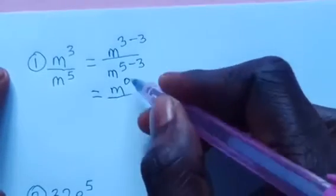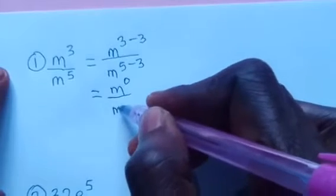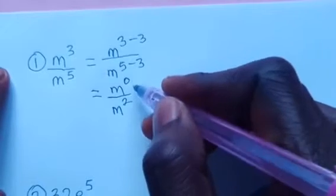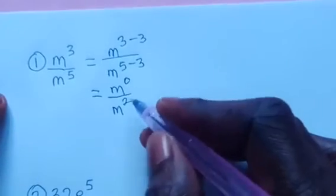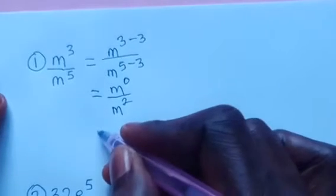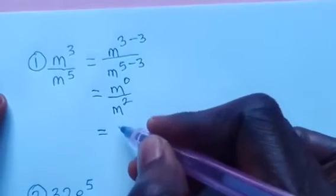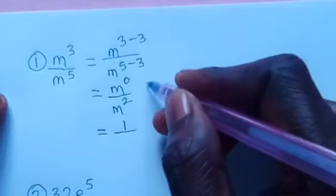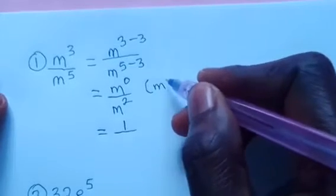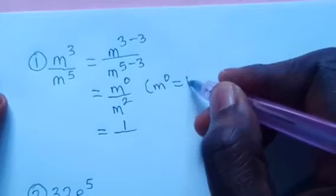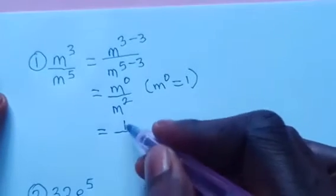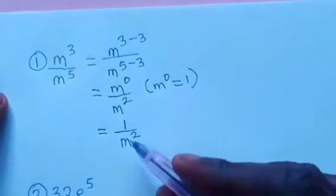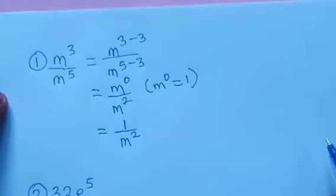In the next step, we write m power 0 because 3 minus 3 is 0, then divide by m power 2 because 5 minus 3 gives us 2. In the final stage, m power 0 is 1 according to the law of indices, which states that a zero index equals 1. So our m power 0 returns to 1 and m power 2 remains, giving us the final answer 1 over m squared.